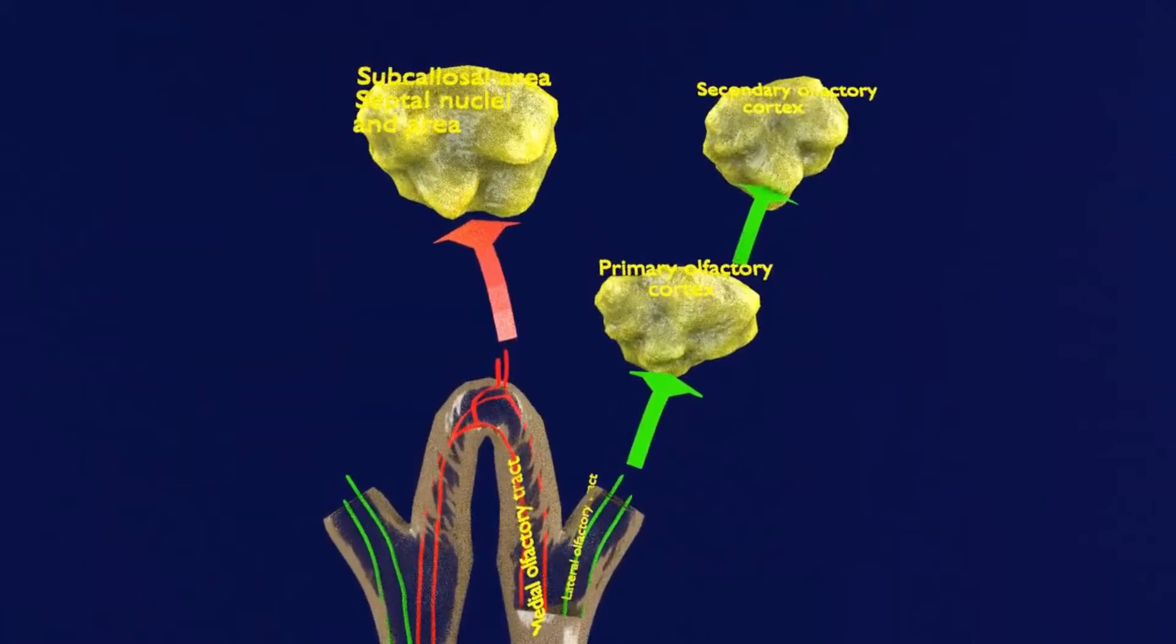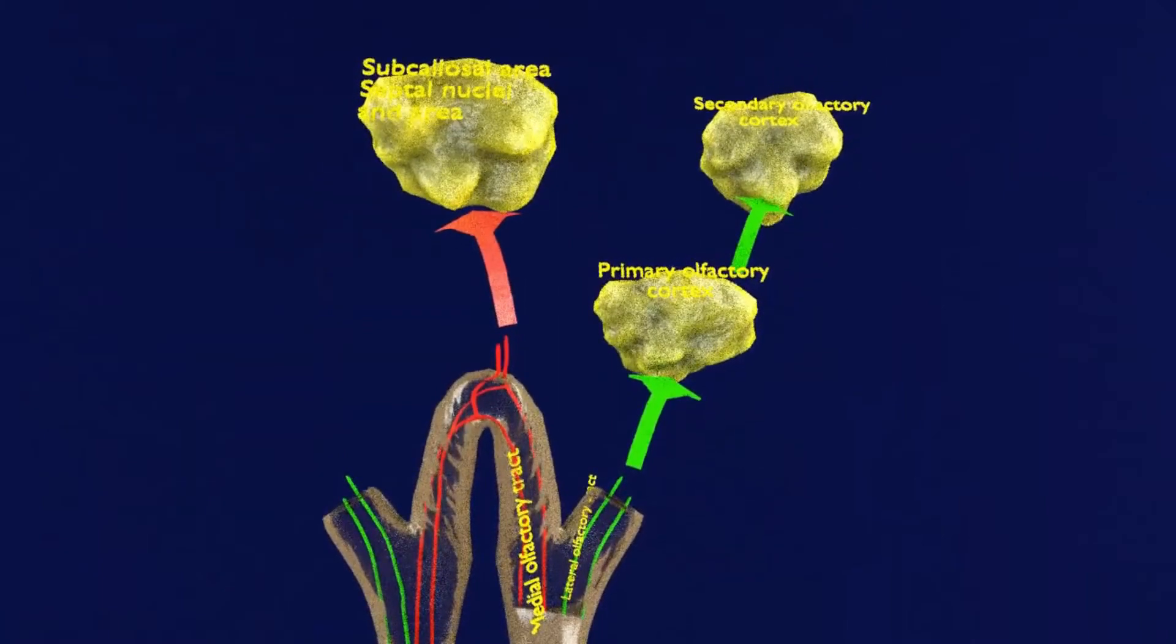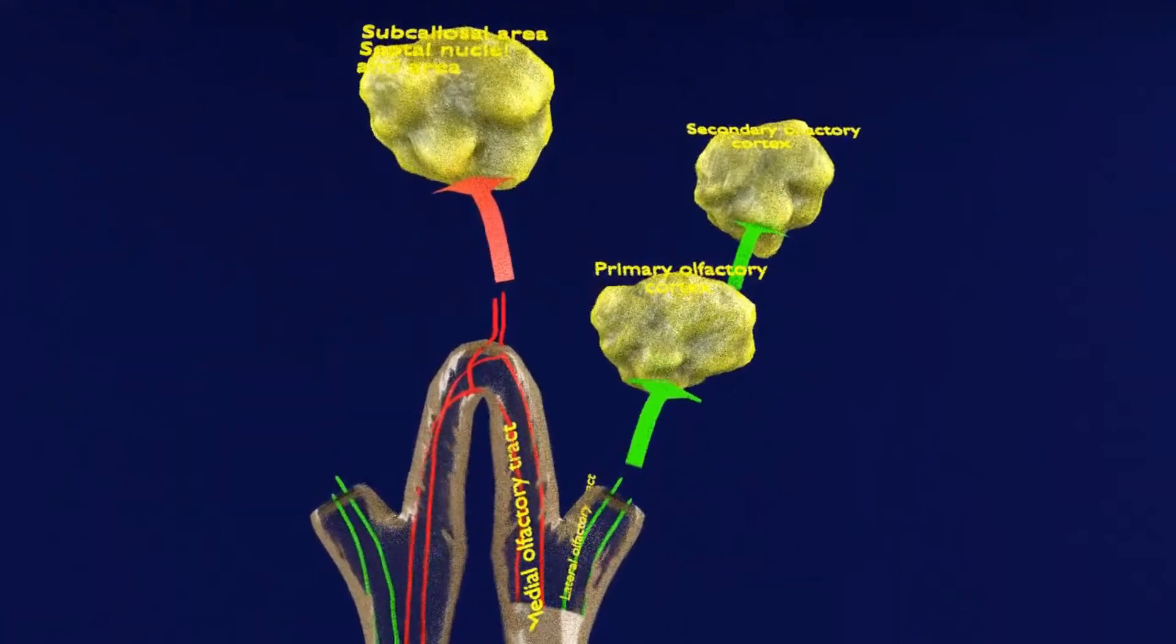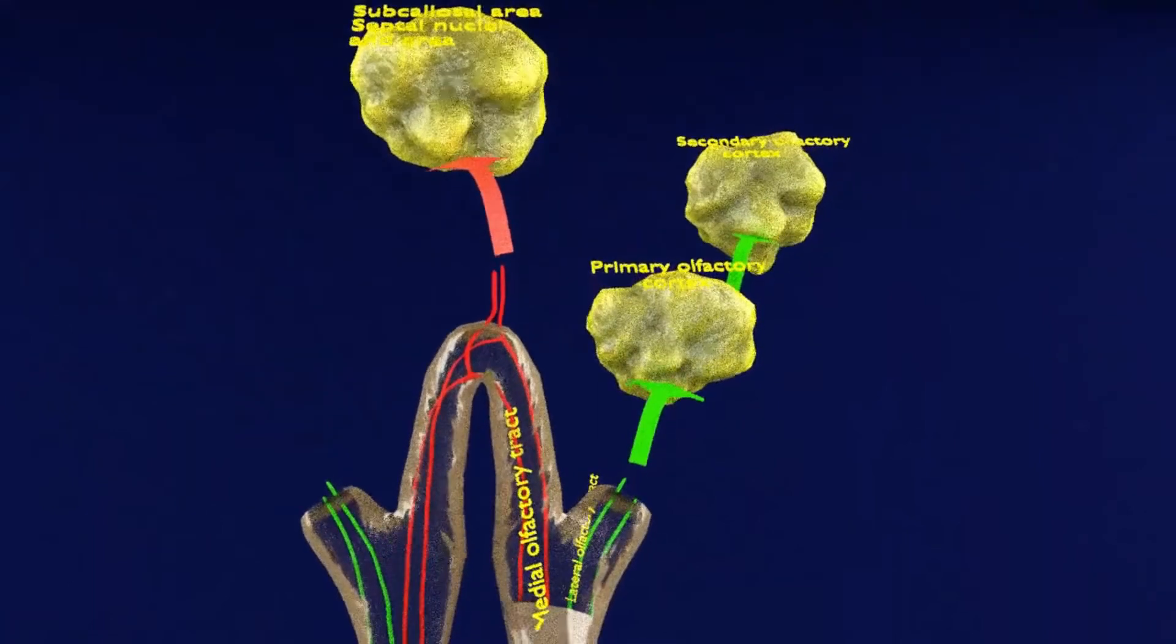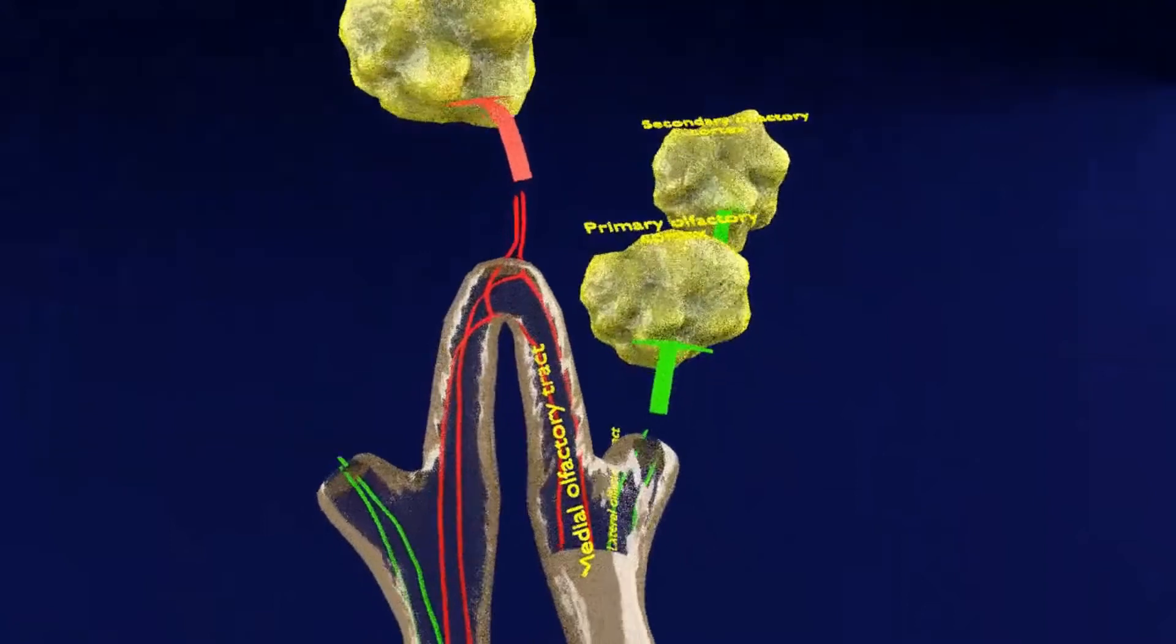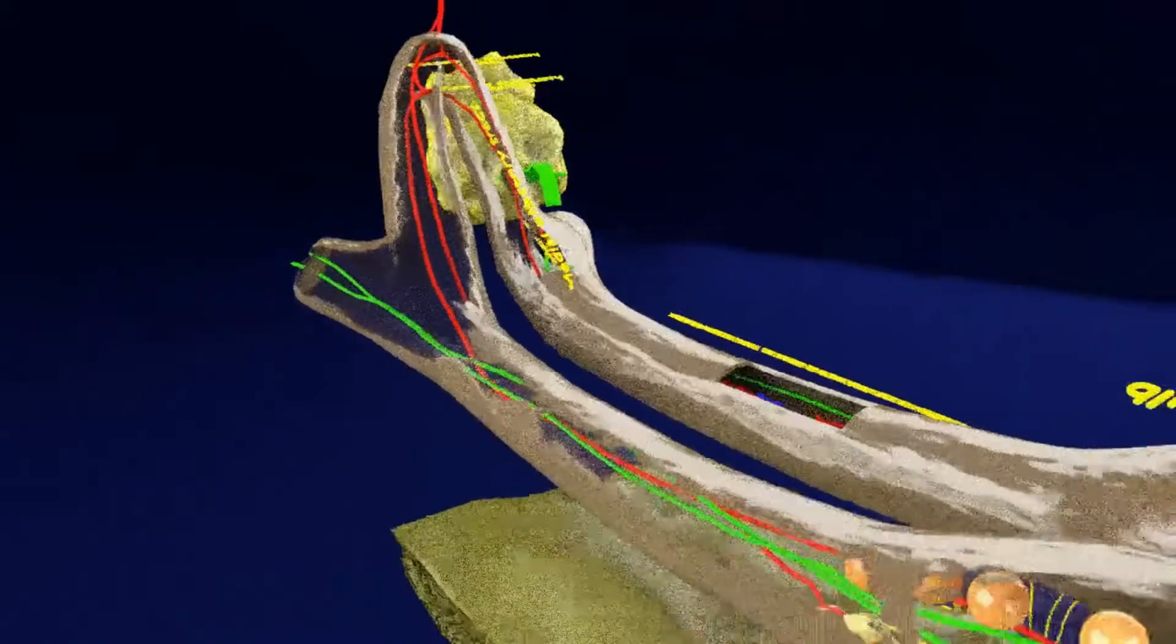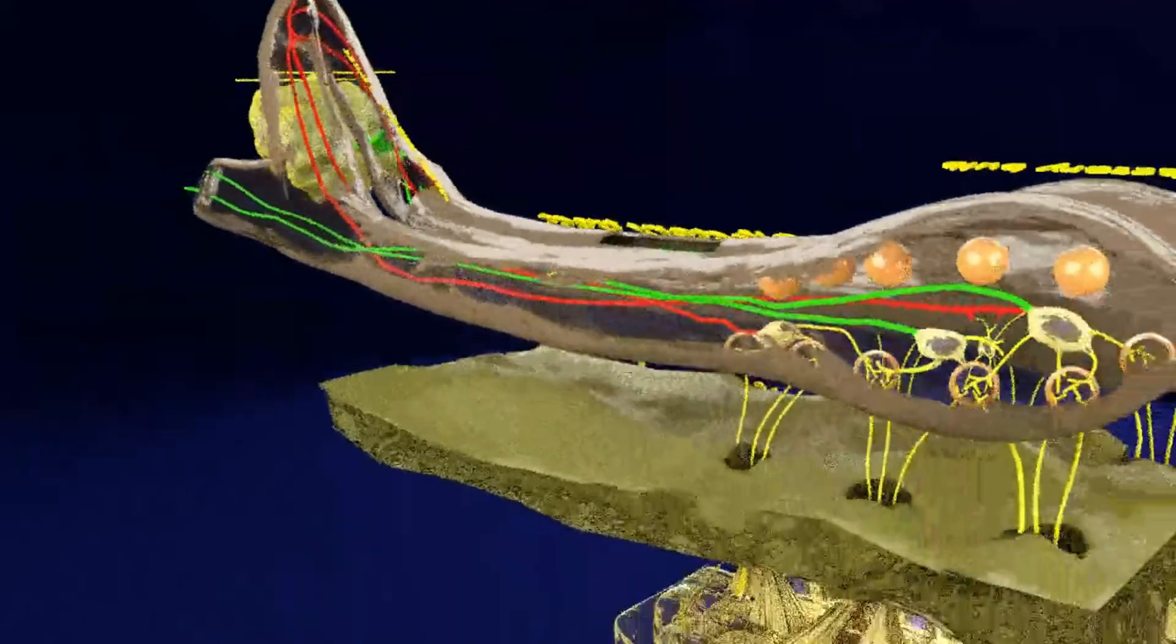The fibers of the medial tract end into the subcallosal gyrus or septal area in the frontal lobe. Some of the fibers of the medial tract cross over to the contralateral olfactory bulb and the anterior olfactory nucleus.